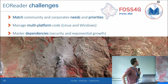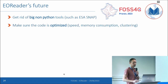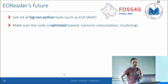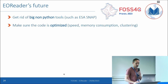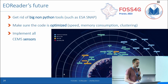Some challenges we face: matching community and corporate needs and priorities, ensuring the code works on Linux and Windows, and mastering dependencies for security reasons to avoid exponential growth. For the future, we want to get rid of non-Python tools, though it will be very difficult. We want to make sure the code is optimized — it works now but we know it's not optimized. We plan to test on Microsoft Planetary Computer. And of course we want to implement all the CMS sensors, as lots of new ones will arrive in the near future. Thank you.